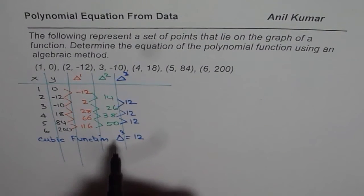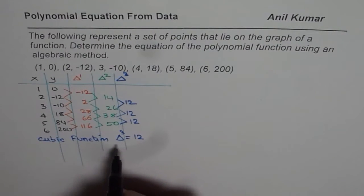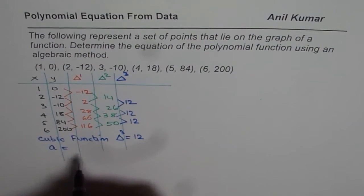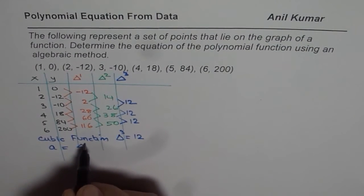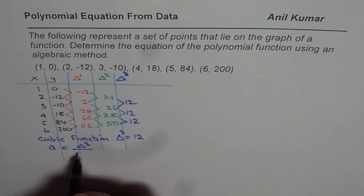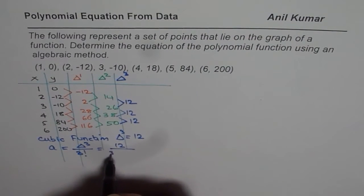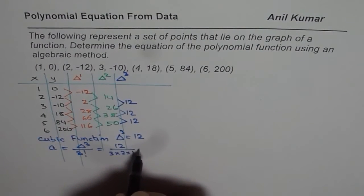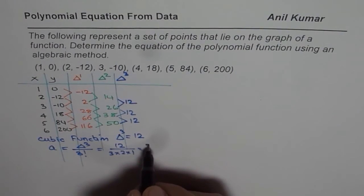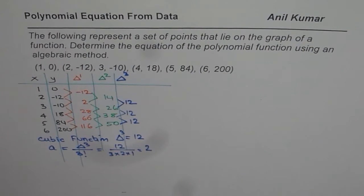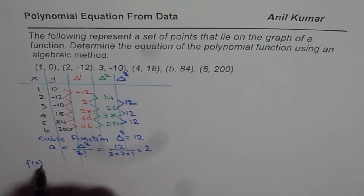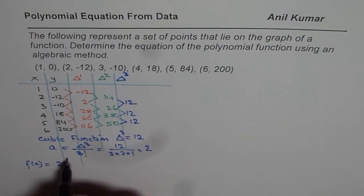Since the third difference is constant, we can find the leading coefficient a. The leading coefficient a equals the constant third difference divided by 3 factorial. The third difference is 12, and 3 factorial is 3 times 2 times 1, which is 6. So 12 divided by 6 is 2. The leading coefficient is 2, so we write 2x cubed.